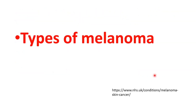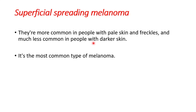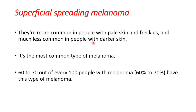Now we're going to talk about the types of melanoma. Let's start with superficial spreading melanoma. These are more common in people with pale skin and freckles and much less common in people with darker skin. It's the most common type of melanoma — 60 to 70 out of every 100 people with melanoma have this type.